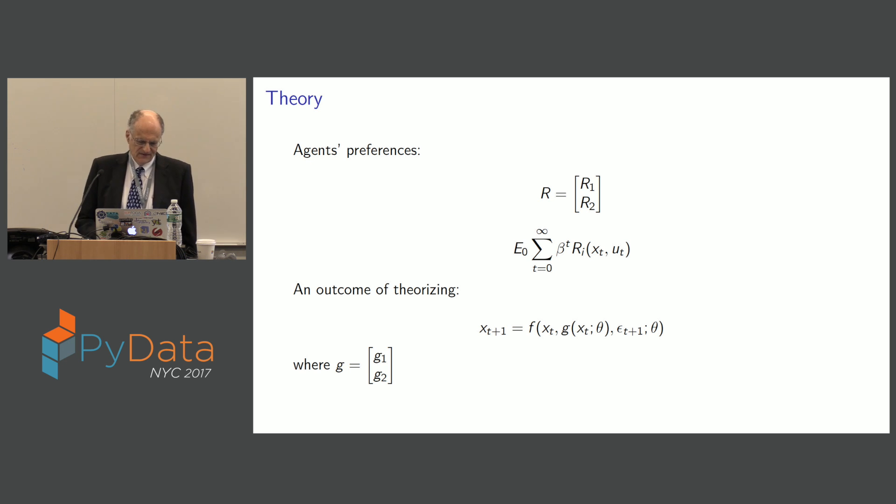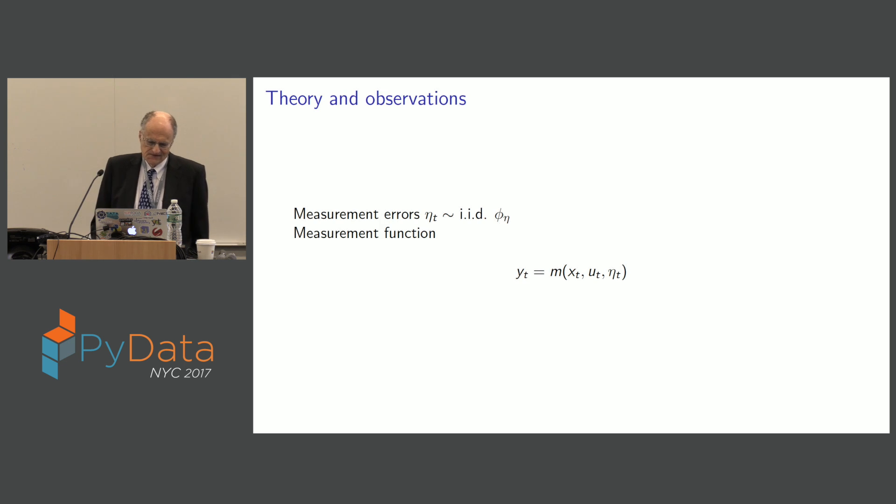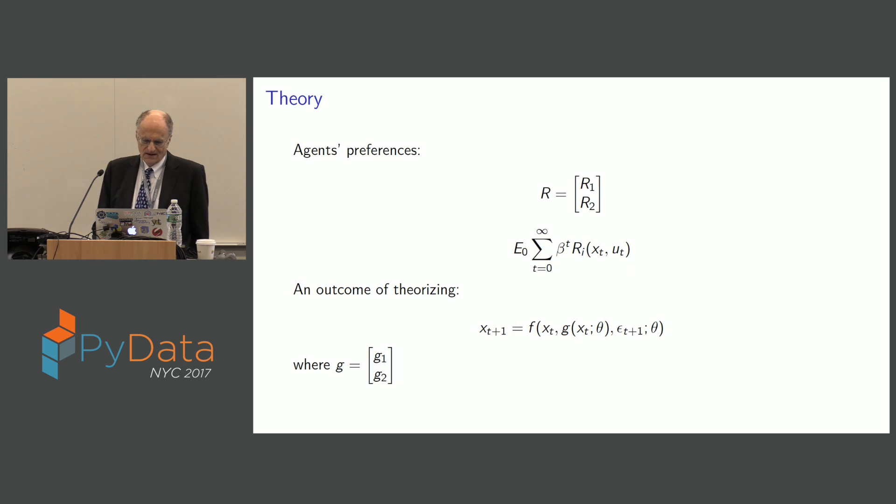And so the outcome of the theory is going to be a set of decision rules that solve that max problem. So if you're an engineer or mathematician, you'll see, you'll say this is not a well posed problem. I haven't told you enough about this to write a Python program. I've told you pieces of it. The kind of economics I like to do is if you can't write a Python program, you're a bullshitter.